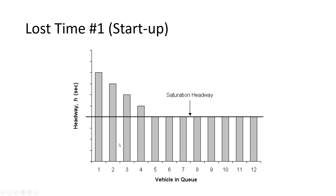In the example shown, the very first car in the queue may take twice as long to get past the stop bar. As the queue speeds up — kind of like a train moving out of a station — the headway drops. The time between cars decreases until we reach the equilibrium saturation headway. In our examples, that's two, two and a half, or three seconds. We lose some time during that first startup period because it takes a while for the vehicle queue to get moving.